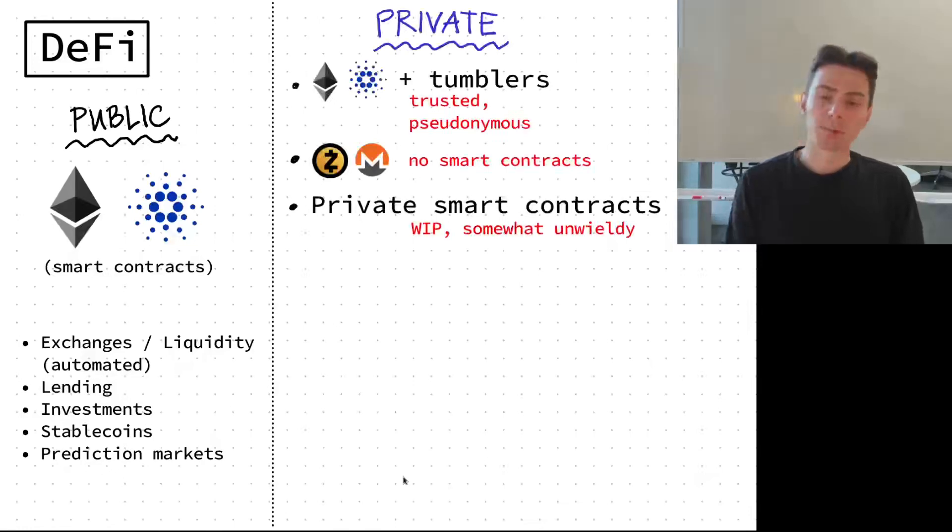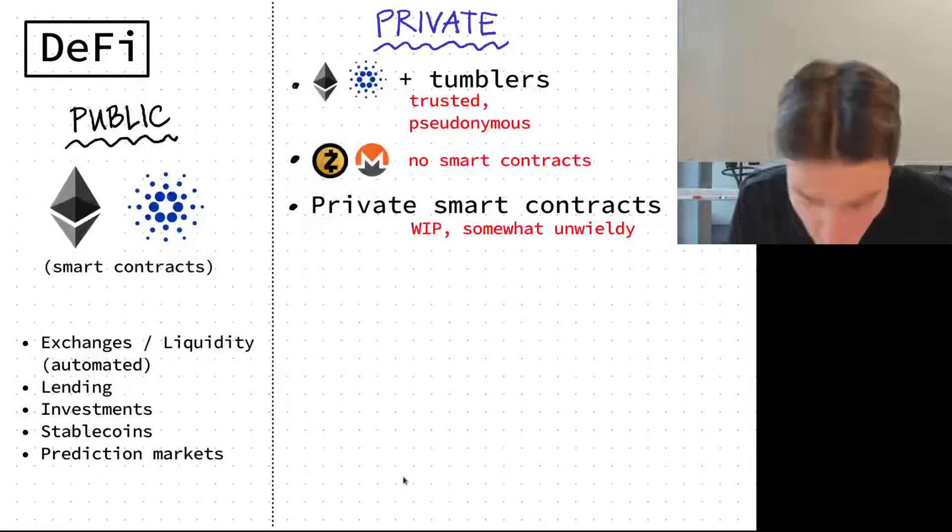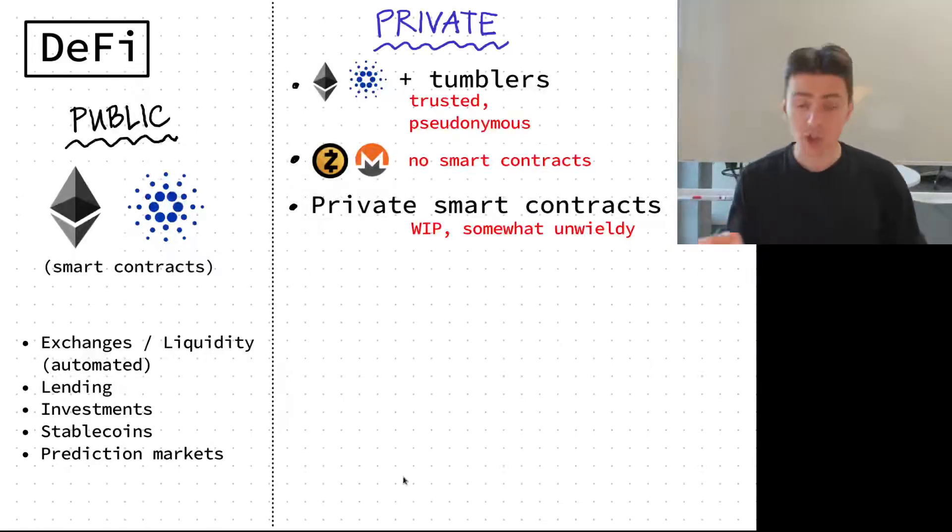If someone wants to implement something like that on private ledgers, it's much more complicated not just because of inherent limitations but because of practical considerations. If you want to add some kind of anonymization tool on top of Cardano or any public chain, like a tumbler or mixer, it's often trustless anonymous or it requires a lot of setup.